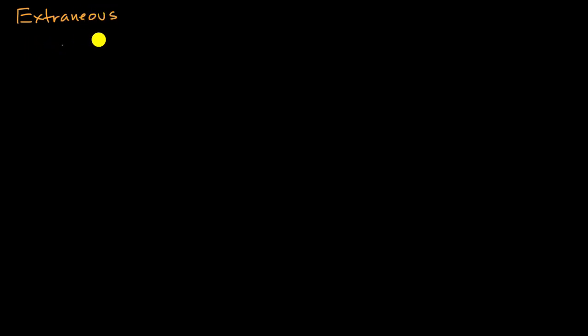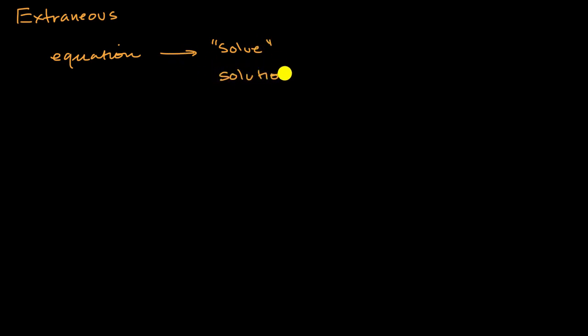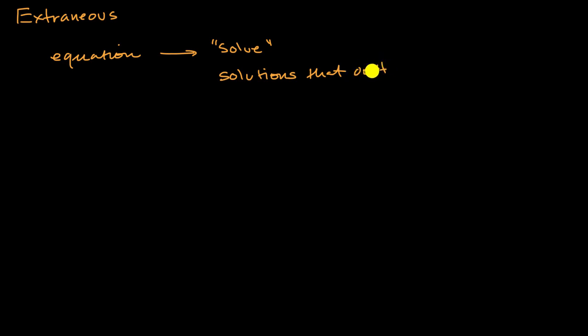In other videos, we've already introduced the idea of an extraneous solution, where you go about solving an equation — you're given an original equation, you do a bunch of algebraic steps, and then you solve it and get some solutions. What we've seen, especially when dealing with radical equations and some rational equations, is that sometimes not all of the solutions work for our original equation. The solutions that don't work are the ones we call extraneous.